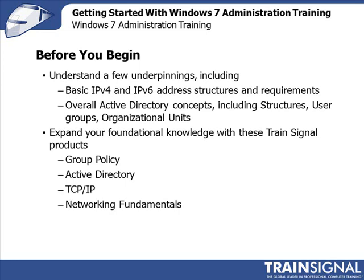Before you get started with this course there are a few things you really need to understand. You should have a basic understanding of IPv4 and IPv6 address structures and requirements. You should also have at least a cursory knowledge of Active Directory concepts including overall Active Directory structures, user groups and organizational units. If you need some refresher information on these concepts, use the TrainSignal products shown on your screen. TrainSignal does have courses for Group Policy, Active Directory, TCP/IP and Networking Fundamentals.